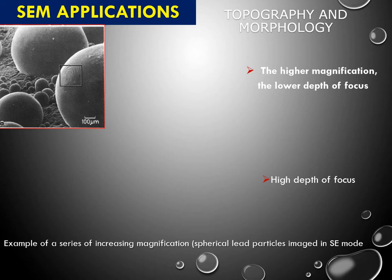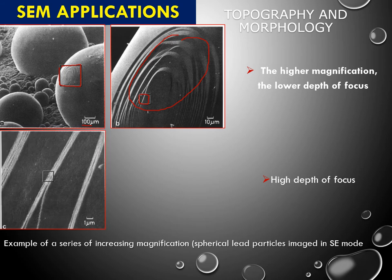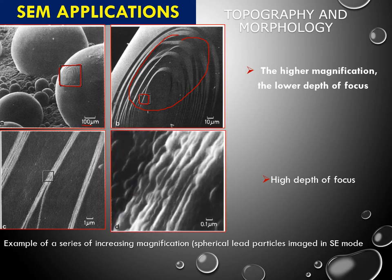You can see here some applications with varying magnification. At one point we can magnify up to many times — this is at the 100 micrometer scale. Going further, at 10 micrometers at a particular point it gives a different shape. Going further still to 1 micrometer range, you can see the higher depth of focus, showing how the morphology and shape and surface look. So up to higher depth you can study the topography and morphology with SEM images.